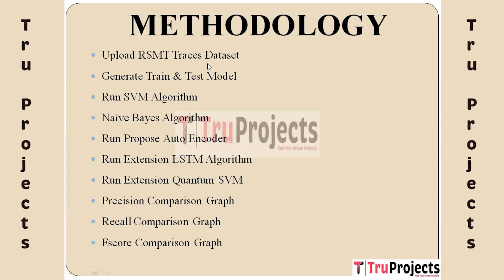The first module involves uploading the dataset obtained from the Robust Software Modeling Tool (RSMT), which records the execution behavior of the web application. This raw trace data serves as the foundation for the subsequent steps. It is crucial for capturing the real-world web activity necessary for training and testing the models.